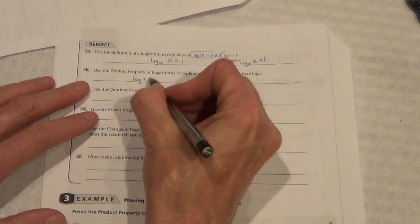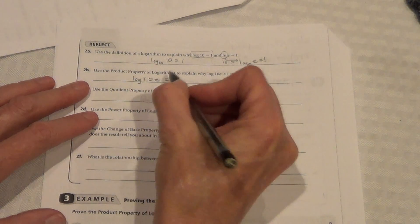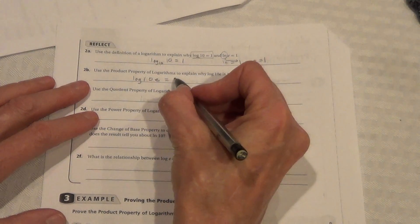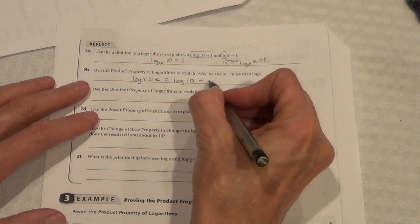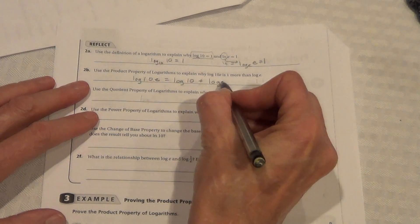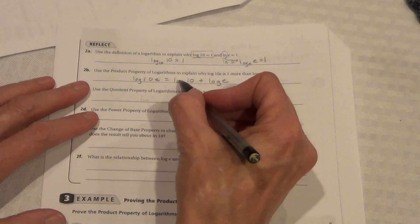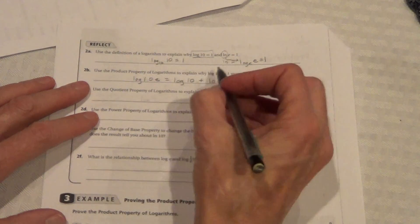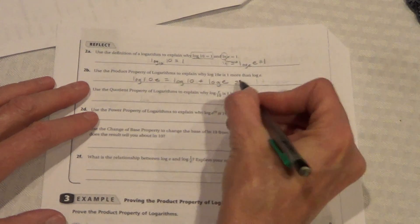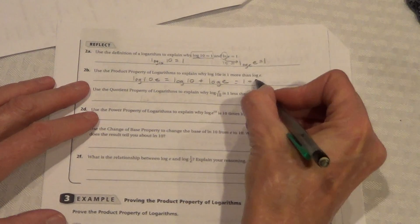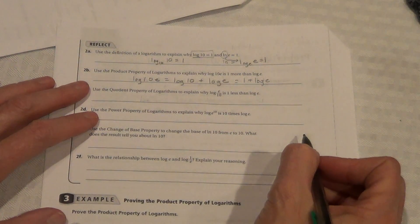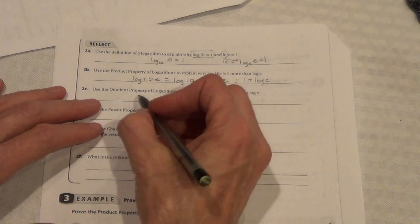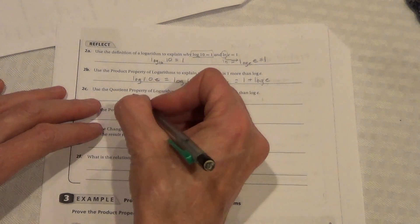Use the product property of logarithms to explain why log 10e is 1 more than log e. Log 10e. See how we're multiplying them? Log 10 plus log e. Because we're multiplying, we add them. Log 10, we just said, is 1. So, that equals 1 plus log e.